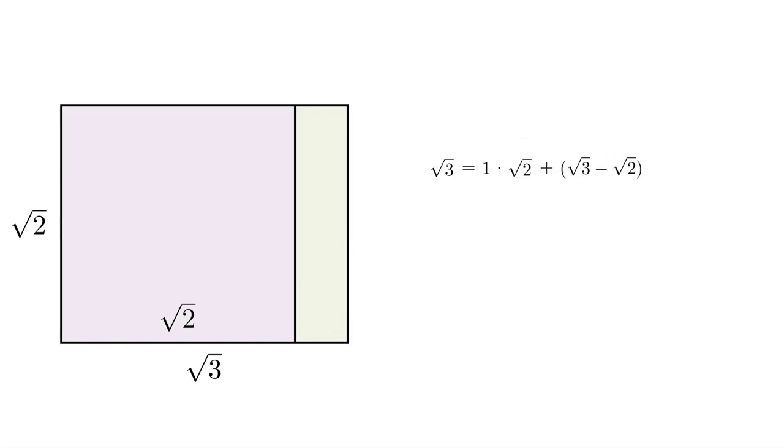Now we're doing the Euclidean algorithm. So we iterate and ask ourselves, how many times does the previous stage's remainder divide the square root of two? We can represent that geometrically by drawing squares of side length root three minus root two. And we see that there are four of those squares that would fit into that length of the square root of two. And we've got a remainder left over. The remainder is five root two minus four root three.